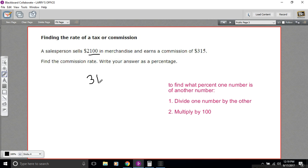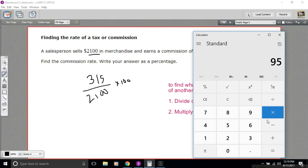So we're going to divide 315 by 2,100 and then multiply by 100. Let me pull out the calculator here. I've got 315 divided by 2,100 and then we multiply by 100.